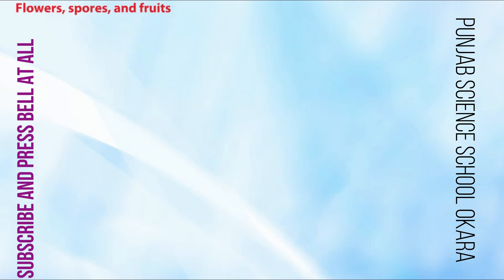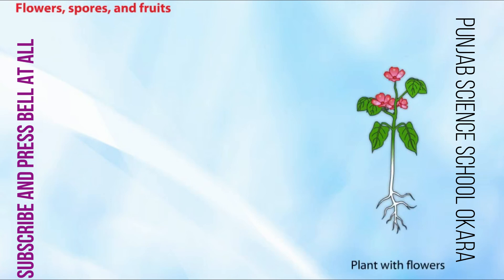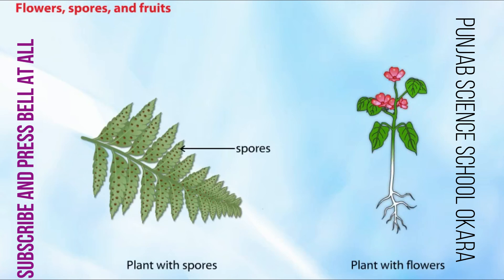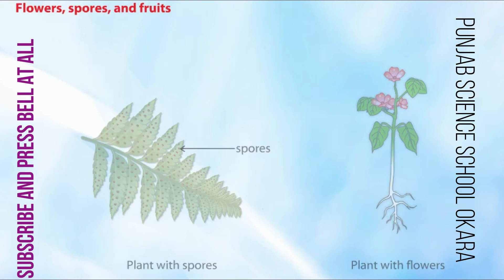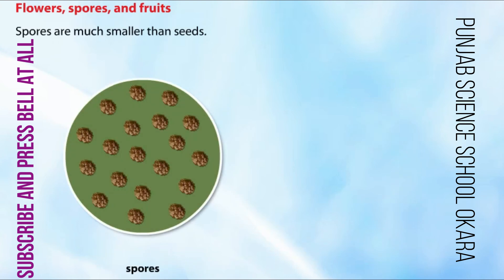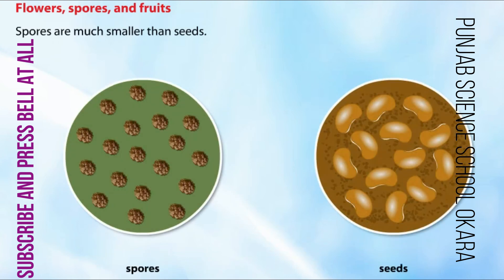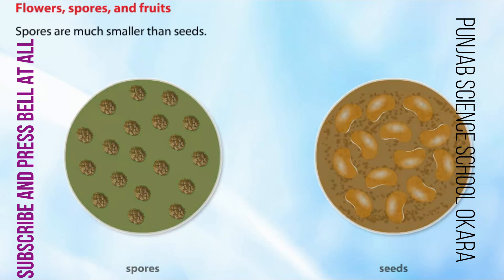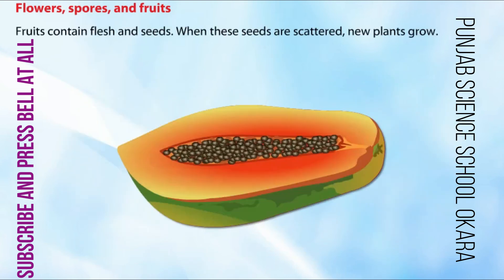Not all plants produce flowers and seeds. Some plants produce spores. Spores are much smaller than seeds. Some plants grow fruits. Fruits contain flesh and seeds. When these seeds are scattered, new plants grow.